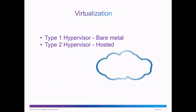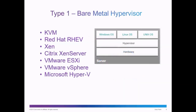There are two types of hypervisors used in virtualization. A Type 1 hypervisor, known as a bare metal hypervisor, and a Type 2 hypervisor, known as a hosted hypervisor. A Type 1 bare metal hypervisor is a virtualization server. The hypervisor is an operating system that's installed onto the hardware directly, after which virtual computers can be created.